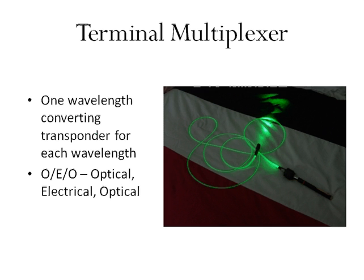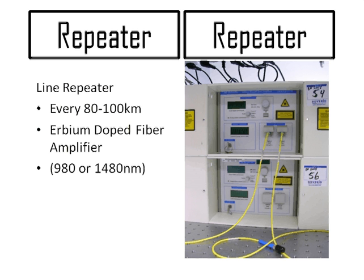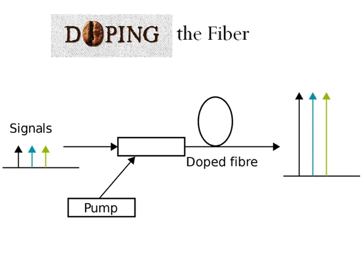After traveling far distances, the optical signal weakens due to photons interacting with each other and the light becoming absorbed by the glass particles in the fiber. Due to this loss of light, the signal must be boosted. An intermediate line repeater is used every 80 to 100 kilometers. These repeaters amplify light using erbium-doped fiber amplifiers, where the core of the fiber is doped with trivalent erbium ions at 980 or 1480 nanometer bands to boost the 1550 nanometer signal region.